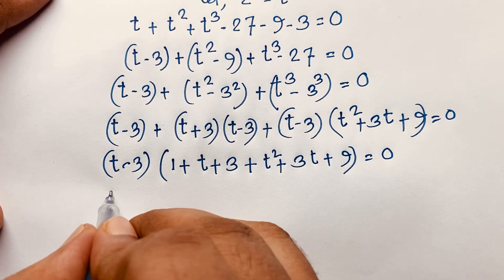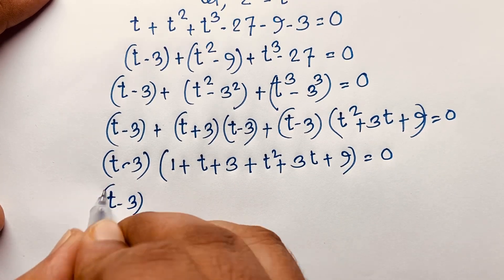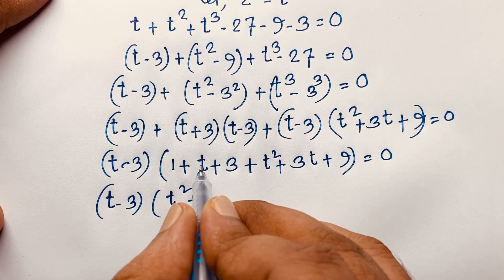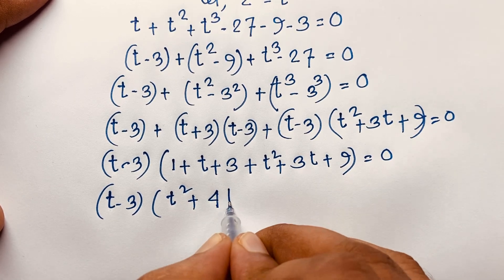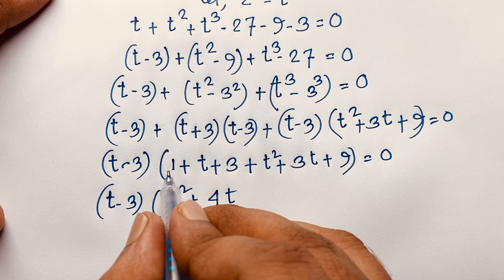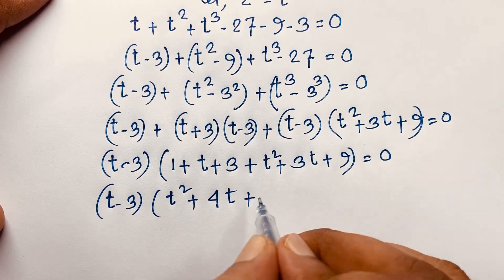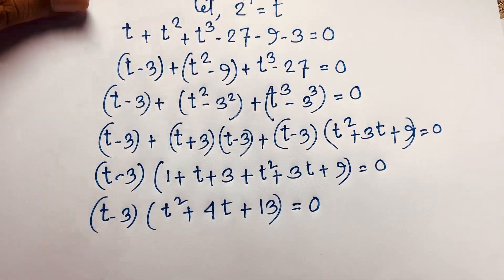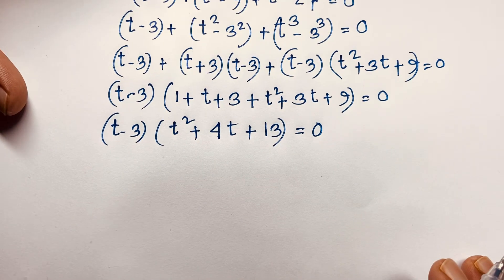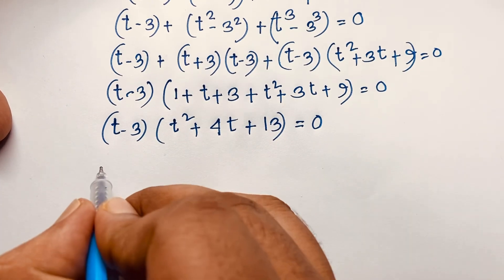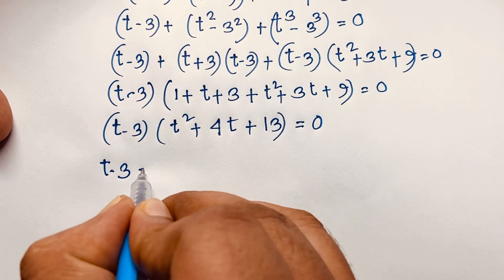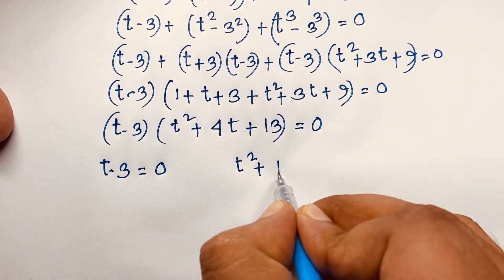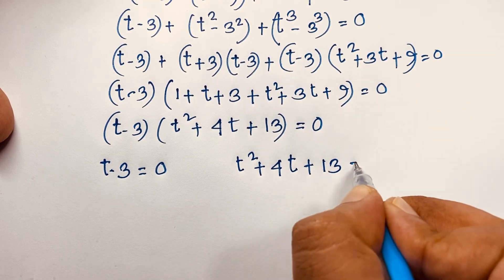Taking (t−3) as the common factor and dividing through, we combine the remaining factors. The t² term, plus the combined t terms give 4t, and the constant gives 13. So the fully factored equation is: (t−3)(t²+4t+13) equals 0. This gives two cases. Case one: t minus 3 equals 0. Case two: t squared plus 4t plus 13 equals 0, which is a quadratic equation.